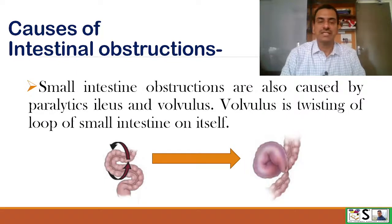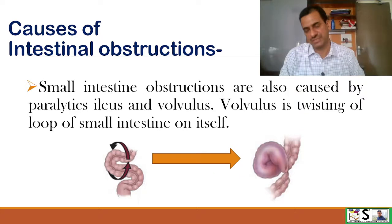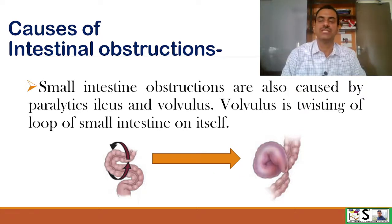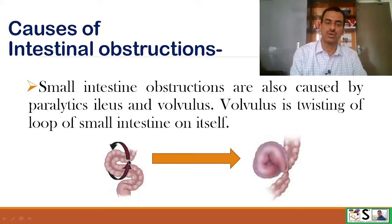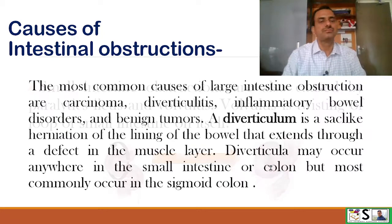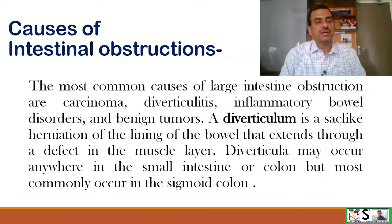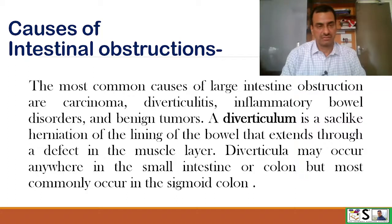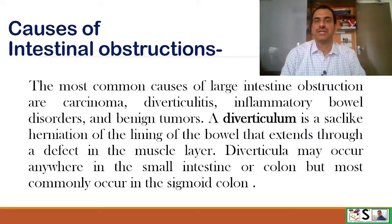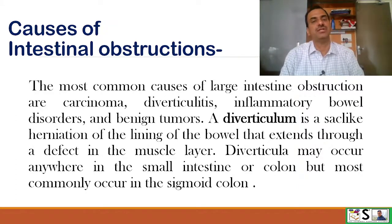Small intestine obstruction is also caused by paralytic ileus or volvulus. Volvulus is the twisting of a loop of small intestine on itself. The most common causes of large intestine obstruction are cancers or carcinoma, diverticulitis, inflammatory bowel syndrome or disorders, and benign tumours.